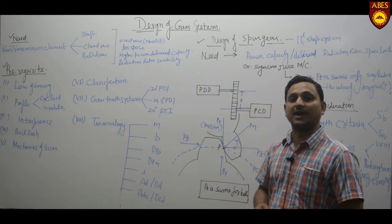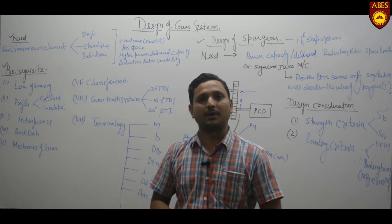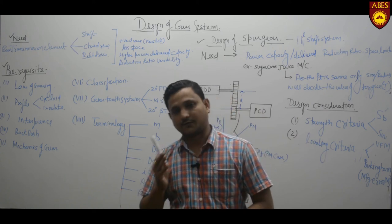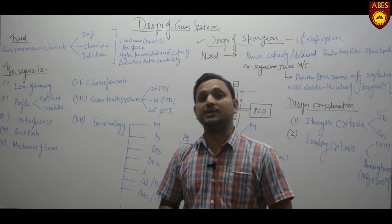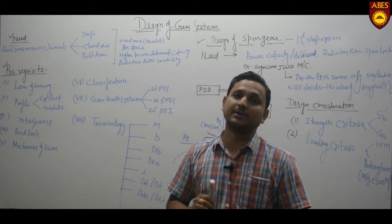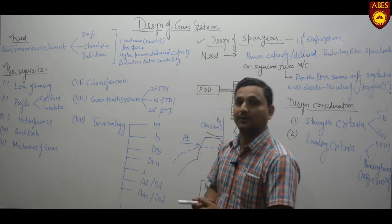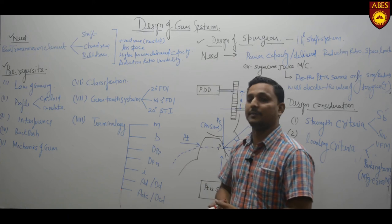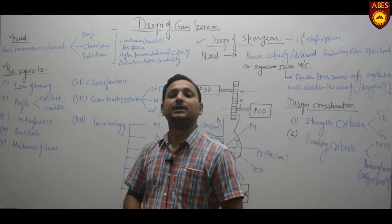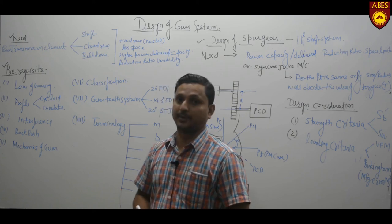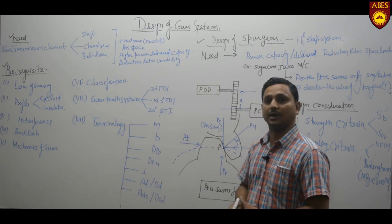And the third one is reduction ratio variability. In gears, just we take an example of our bike or automobile. We plot first gear, second gear, third gear, fourth gear but we can't do this in case of power transferred or delivered via shaft, chain drive or belt drive. It means reduction ratio variability can be obtained in case of gear system. That's why we choose the gear system in comparison to shaft, chain and belt.